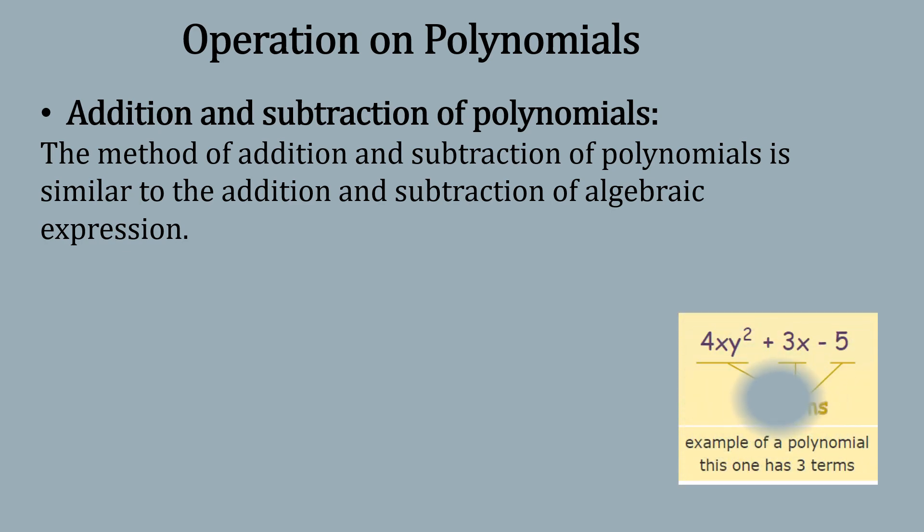I have given one example of polynomials: 4x·xy² + 3x - 5. We can see that there are three terms in this polynomial. The first term is with the variable xy², the second term is with the variable x, and the third is a constant term.